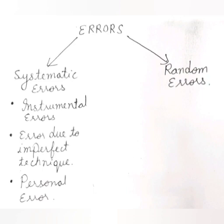Systematic error is also of various types. Number one is instrumental error. Sometimes the instrument used for measurement could be faulty, causing discrepancy in the readings. Instrumental errors are those that arise due to imperfect design or calibration of the measuring instrument. The best example is the zero error of an instrument.